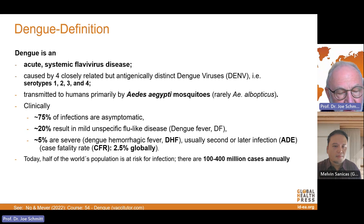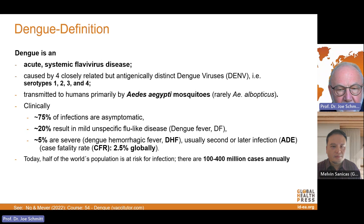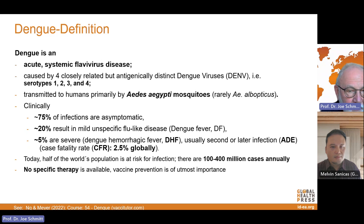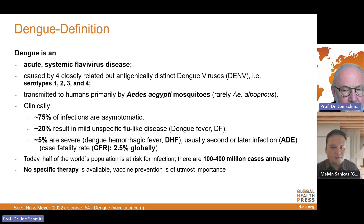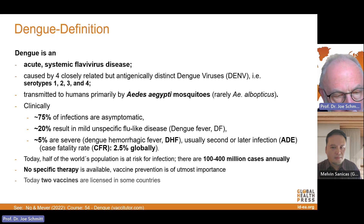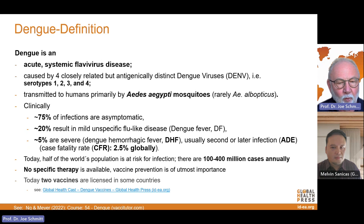Today, half of the world's population is at risk for dengue virus infection, and we show you the risk areas around the globe in another podcast. 100 to 400 million cases are reported annually. There is no specific therapy, but prevention is possible with two vaccines today, and there are other non-medical interventions available in our podcasts. If you want to see more about the vaccines, the link is in the show notes.